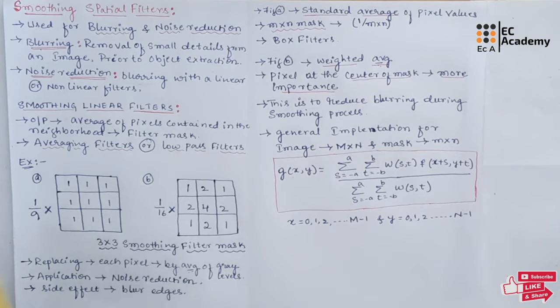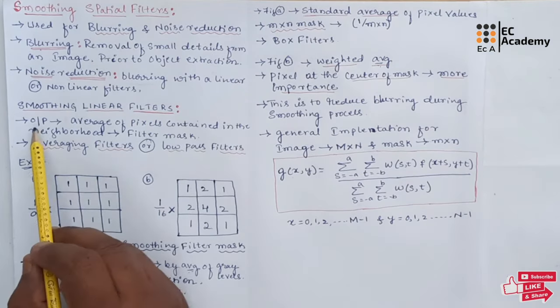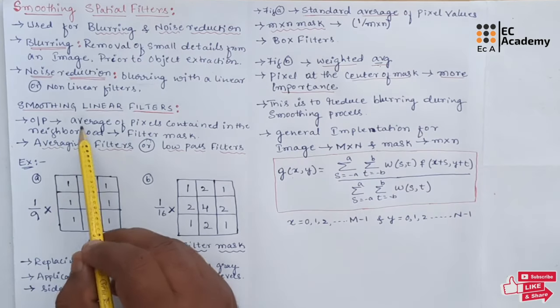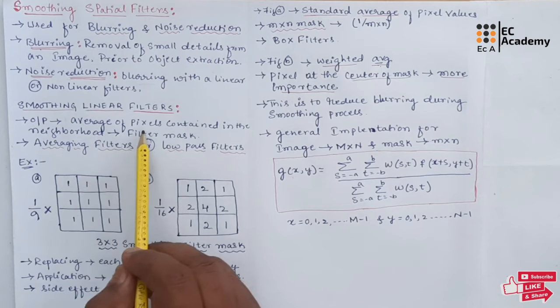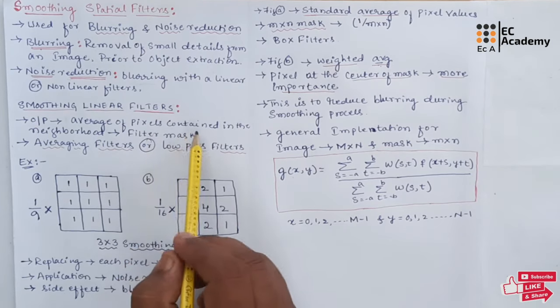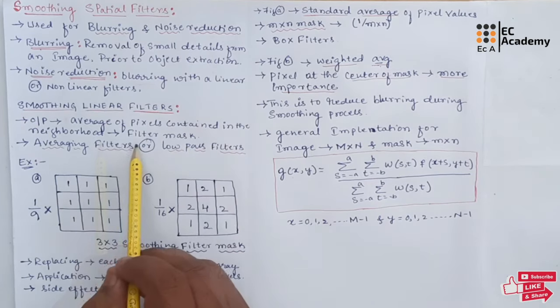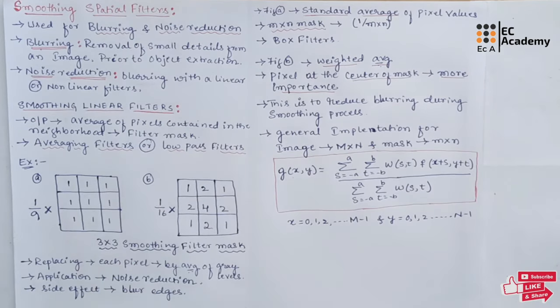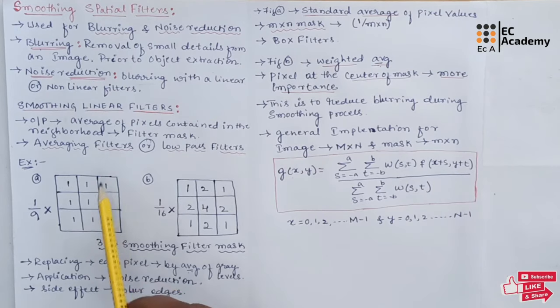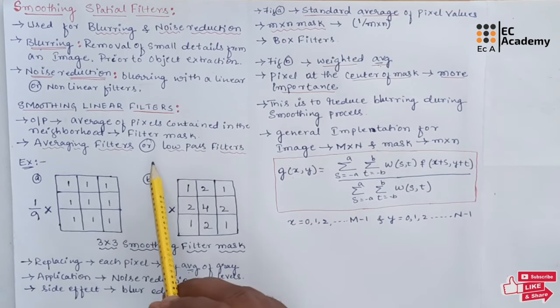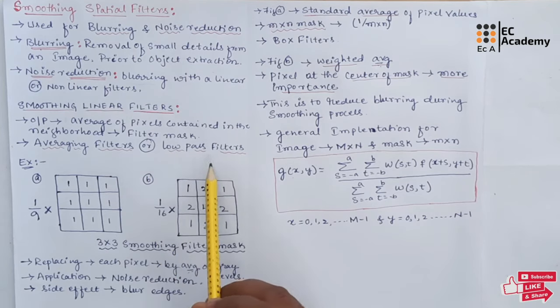Now let us see smoothing linear filters. The output of smoothing filter using linear spatial filter is simply the average of the pixels contained in the neighborhood of the filter mask. So if we consider a mask, if we take the average of these pixel values, we will get the smoothing operation. These filters are also known as averaging filters because we are taking the average and it is also known as low pass filters.